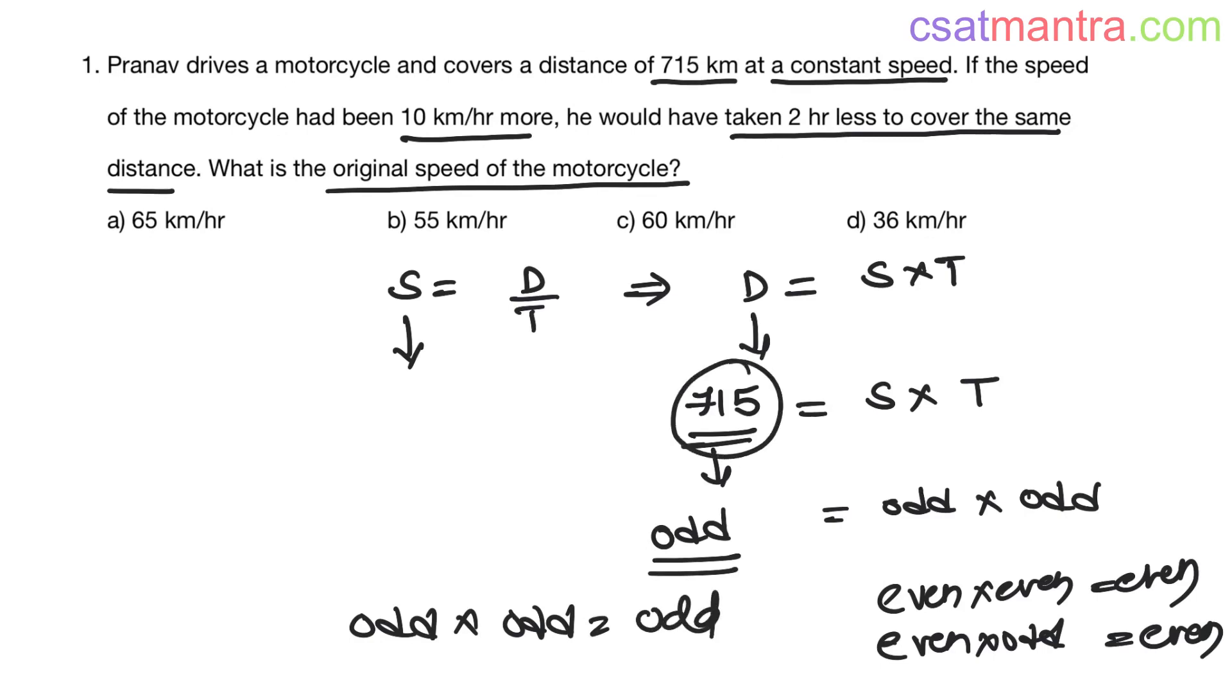So to get 715 as your total distance, the speed has to be odd number and the time has to be odd number. From the options given, eliminate options C and D because here the speed is even number. Now we are left with two options A and B. Let's verify these options.